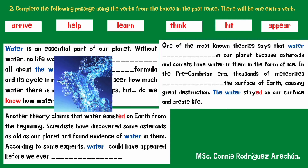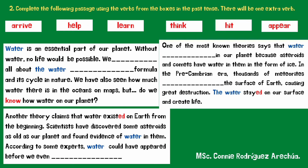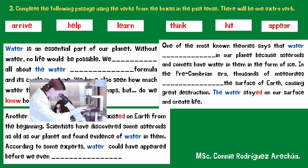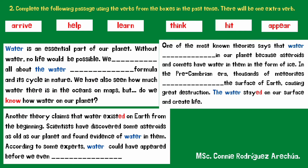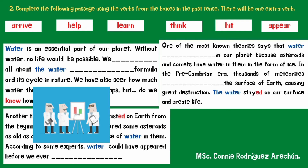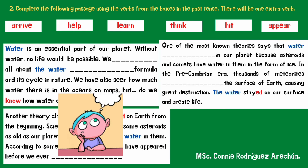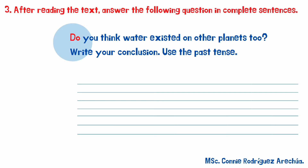Another theory claims that water existed on Earth from the beginning. Scientists have discovered some asteroids as old as our planet and found evidence of water in them. According to some experts, water could have appeared before we even thought.